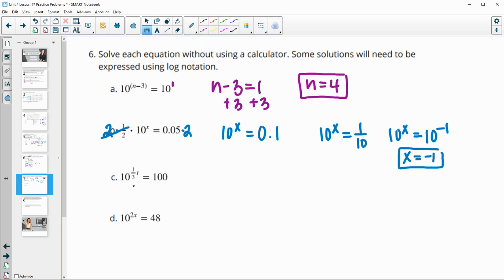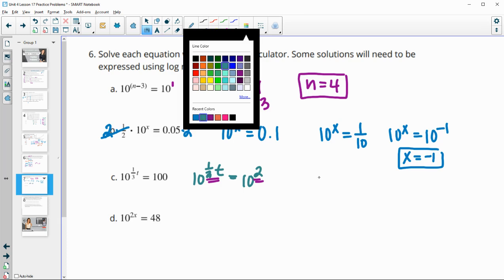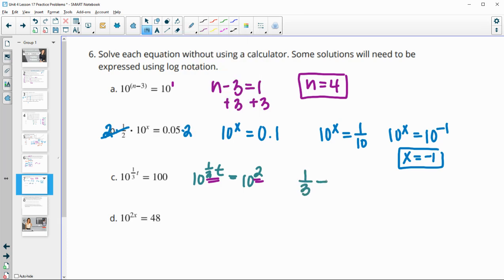Part C, so we have 10 to the 1 third t and we have equals 100. Well, 100 we can write as a base 10. So 100 is 10 squared. And then that's helpful because then we know that these exponents are equal to each other. So we know that 1 third times t is equal to 2. We can undo the 1 third by multiplying both sides by 3 because 3 times a third is 1. So we just get t, and 2 times 3 is 6.